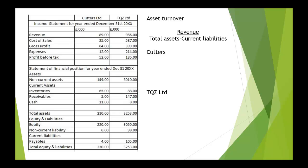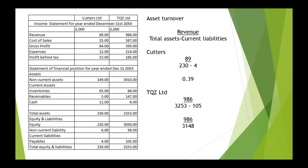So we're going to work this out for Cutters. The revenue is 89, total assets 230, minus the current liabilities which are 4, and that comes to 0.39. And for TQZ Limited, our revenue of 986, our total assets 3,253, minus 105, comes to 986 over 3,148, which comes to 0.31.